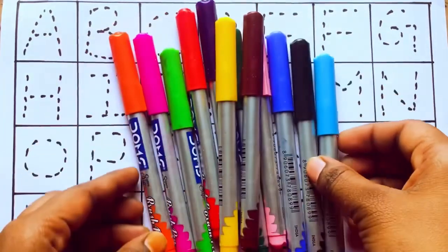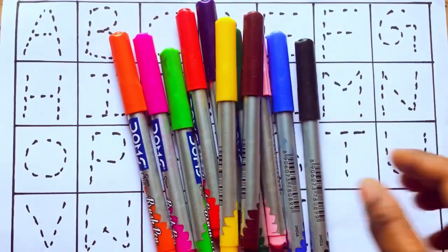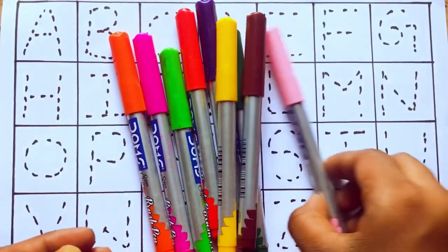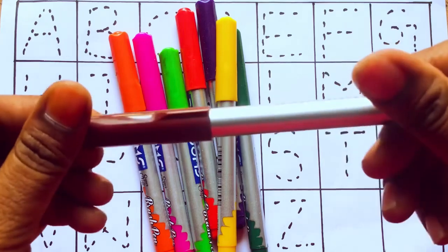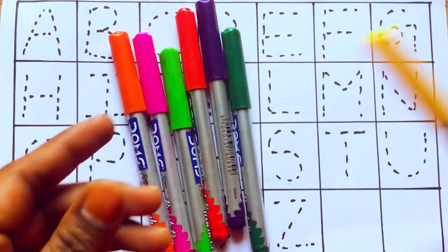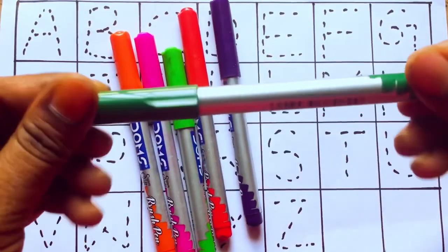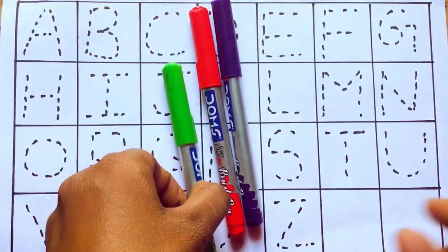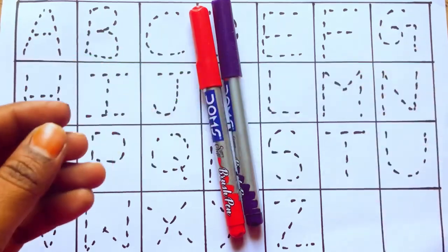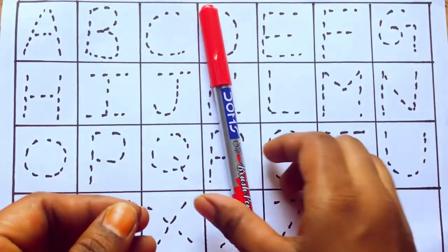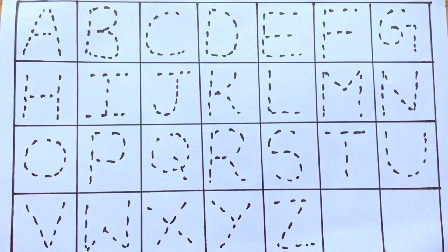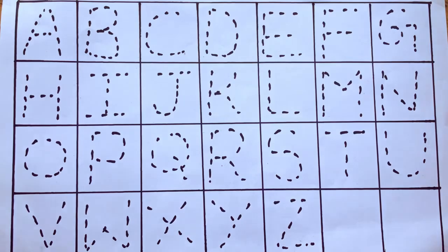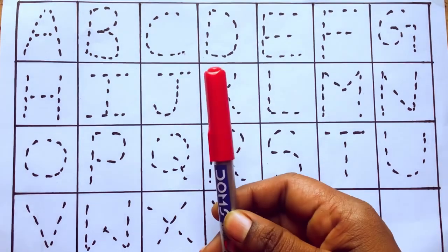Hello kids, let's learn some colors: sky blue, black, blue, light pink, brown, yellow, green, orange, pink, violet, and red. Okay, let's draw alphabets!